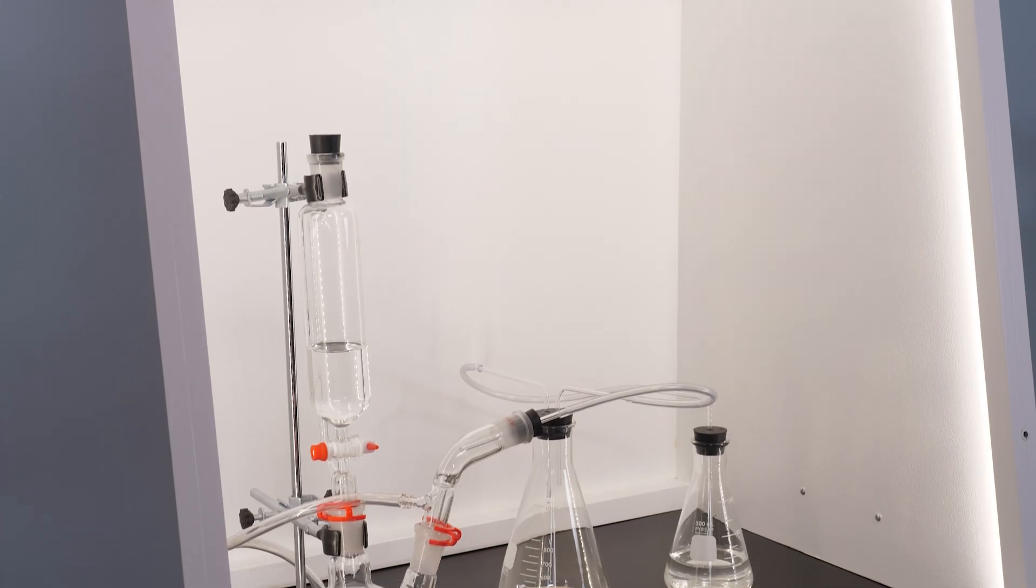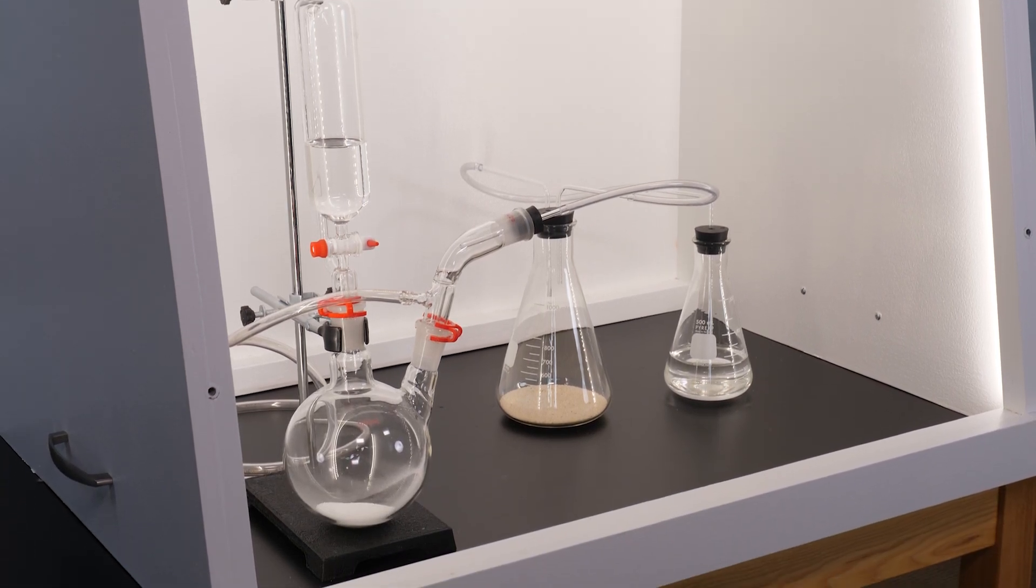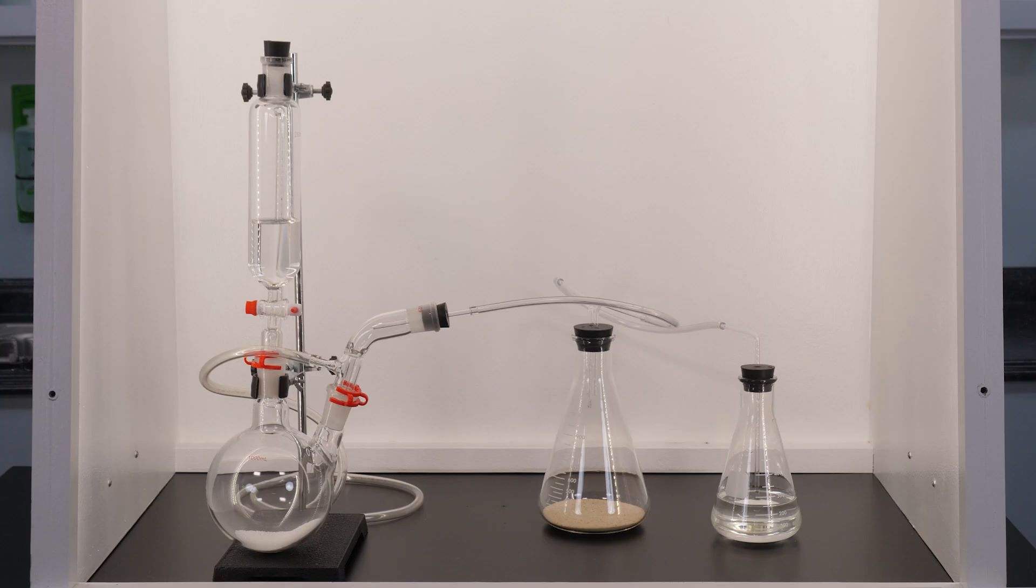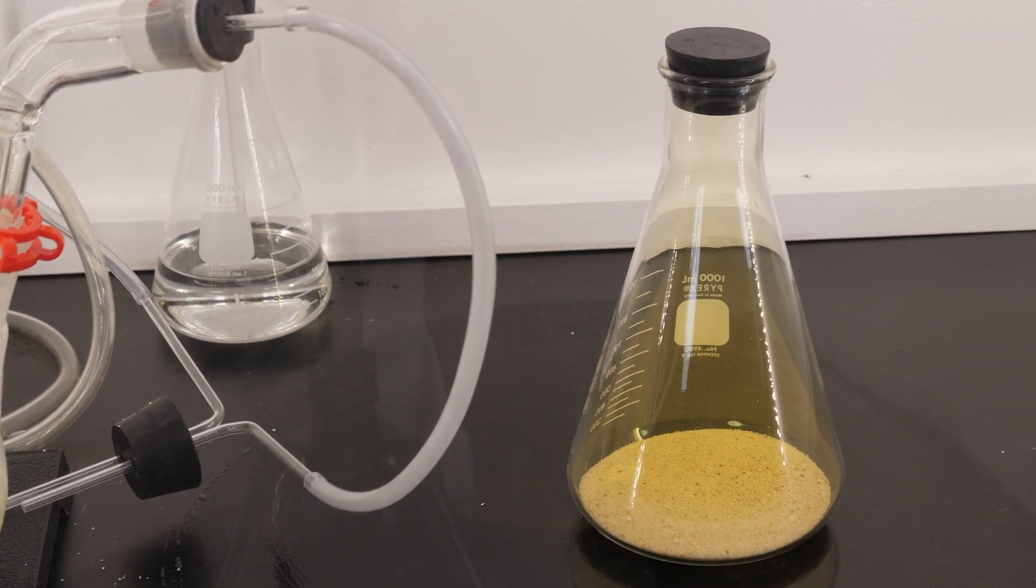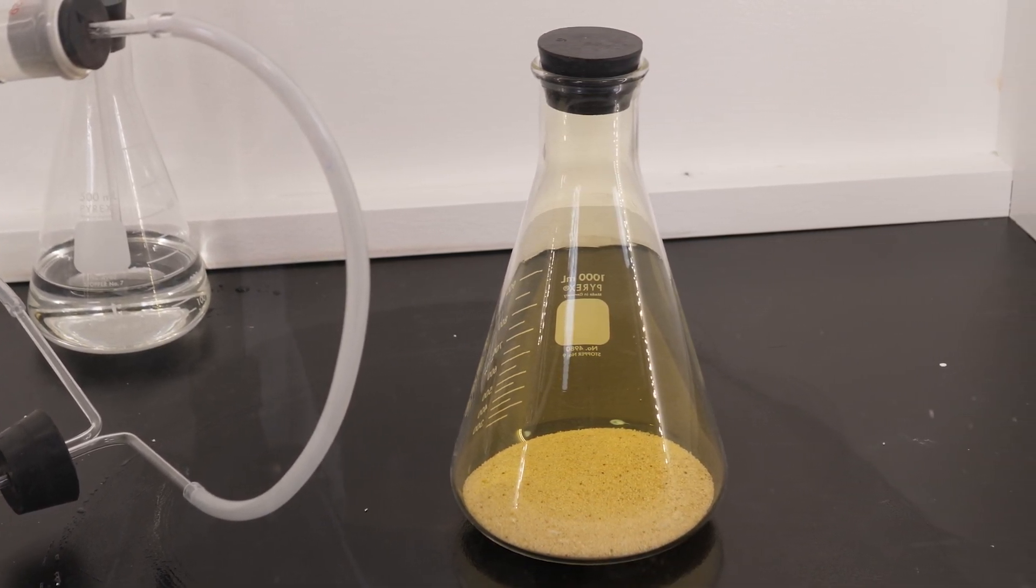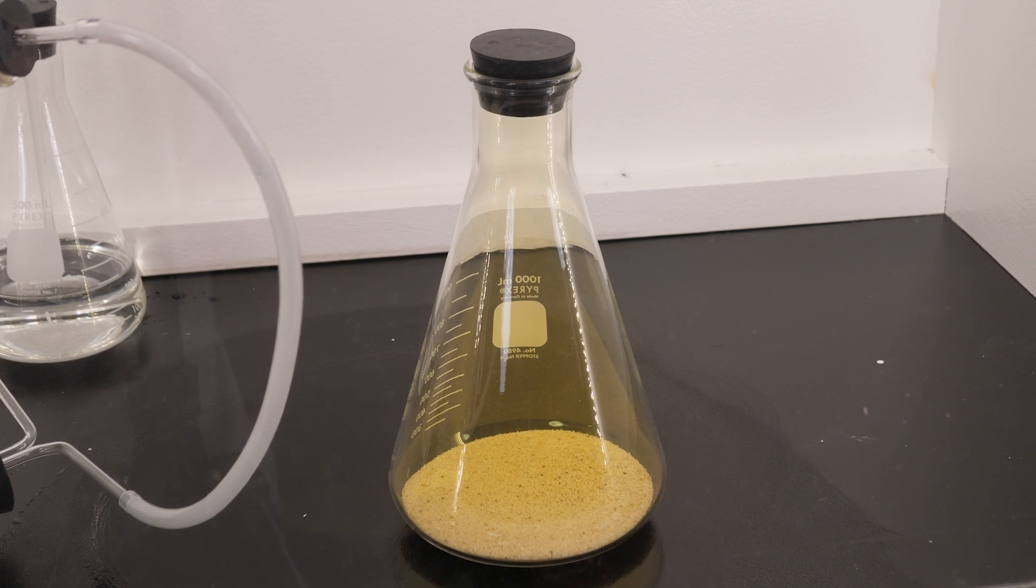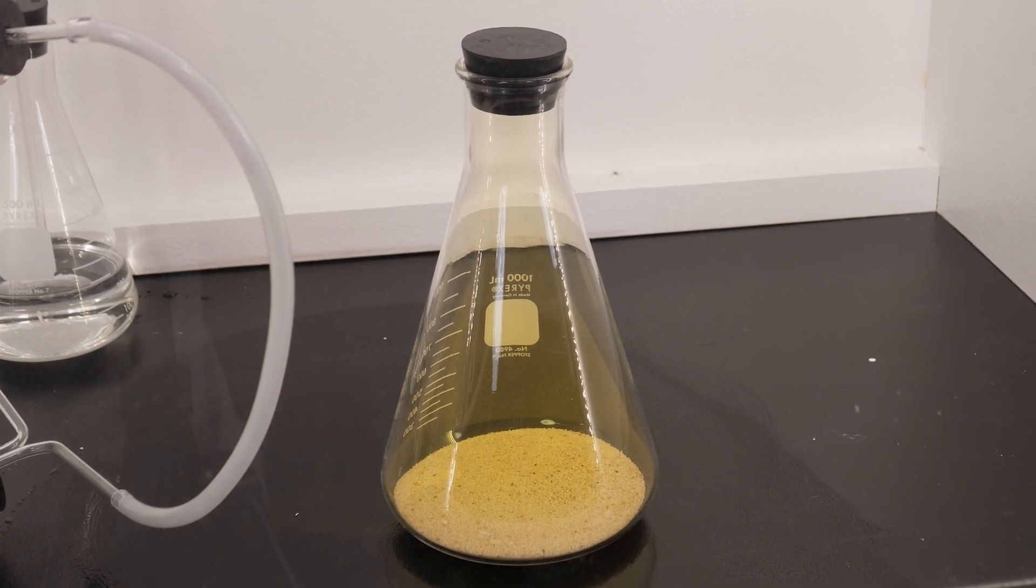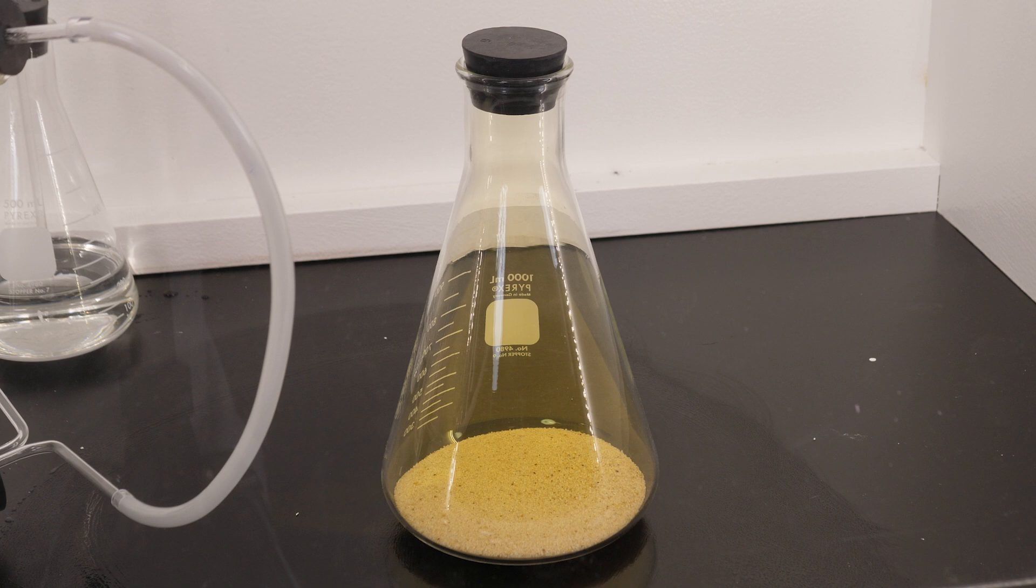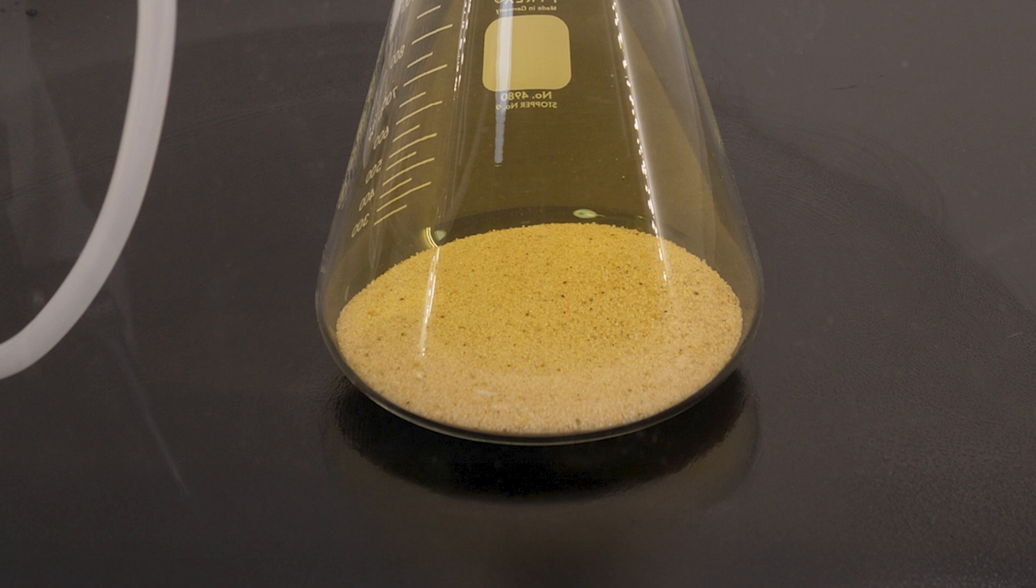This is a sealed system to prevent the chlorine gas from escaping. However, any time you are working with toxic or potentially dangerous chemicals, the experiment should be performed under a fume hood. Using our chlorine generator, we collected 1,000 milliliters of chlorine gas in this Erlenmeyer flask. This gas will be used to react with sodium to produce sodium chloride.